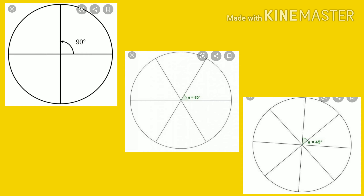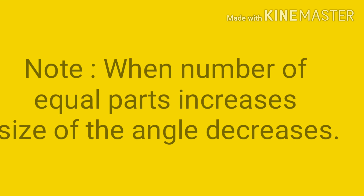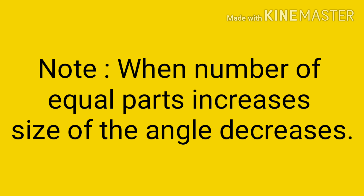Look into the figures. In the first figure, the number of equal parts is 4 and the size is 90 degrees. But in the second figure, when the number of equal parts increases to 6, the size decreases to 60 degrees. Same way, in the last figure, when the number of equal parts increases to 8, the size decreases to how much? 45 degrees. Note: when the number of equal parts increases, the size of the angle decreases.